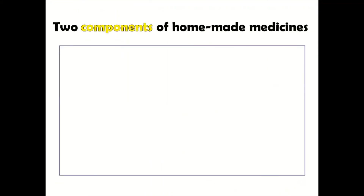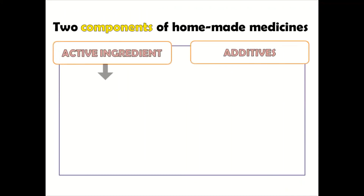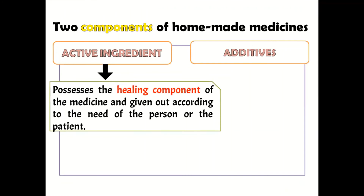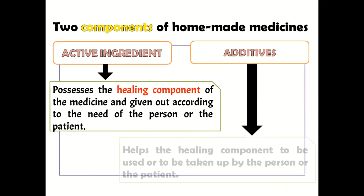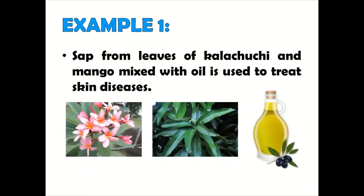There are two components of medicinal mixtures: the active ingredients and the additives. Active ingredients possess the healing component of the medicine and are given according to the need of the patient, while the additives help the healing component to be taken up by the patient. For example, sap from the leaves of kalachuchi and mango mixed with oil is used to treat skin diseases. The active ingredients are the sap from the leaves of kalachuchi and mango, while the additive is the oil.